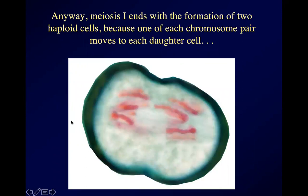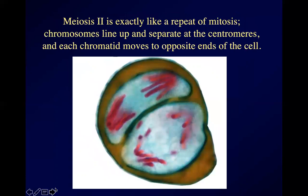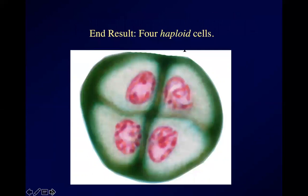After that pairing up and crossing over, meiosis one ends with the formation of two haploid cells because one of each chromosome moves to each daughter cell. Then meiosis two is a repeat — the chromosomes appear again, line up in the middle at metaphase, separate and move to opposite ends of the cell in anaphase two, and we end up with four haploid cells.